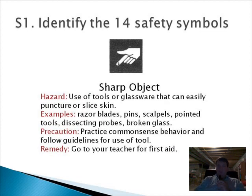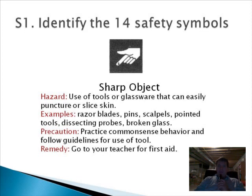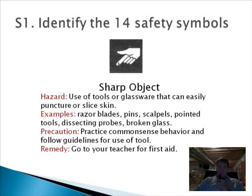The next symbol is pretty self-explanatory — it shows a finger with a little drop of blood on it. This is the sharp object symbol, which you see quite a bit in a science lab. A lot of our equipment is made of glass, and if dropped or knocked over it can break, creating sharp edges. This symbol indicates we're dealing with something that could puncture or cut the skin. Examples include razor blades, pins, scalpels, pointed tools, dissecting probes, and broken glass.